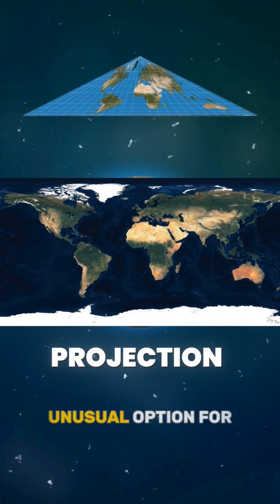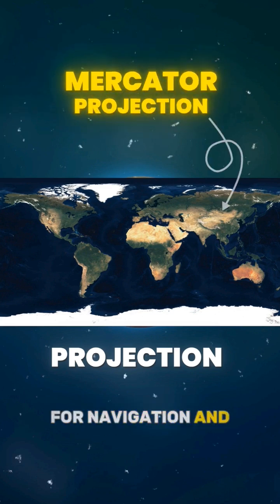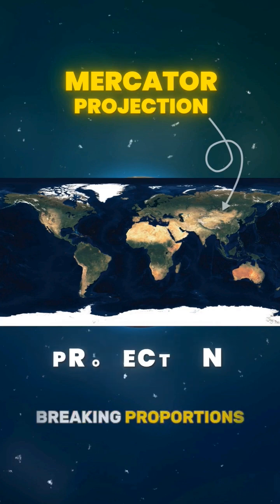That is why the most optimal and usual option for us is called the Mercator projection. It is convenient for navigation and perception, allowing it to keep the shape but breaking proportions.